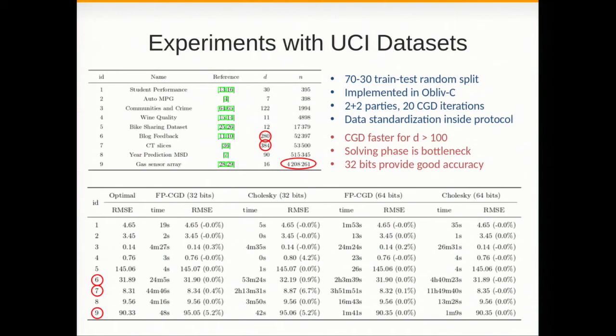CGD is indeed better for bigger number of features. On the other hand after having implemented a very fast aggregation phase our bottleneck now is in the solving phase. For example an example with 384 features takes close to four hours with CGD and 12 hours for Cholesky. While a huge dataset with 4 million records but only 16 features can be solved in less than two minutes.